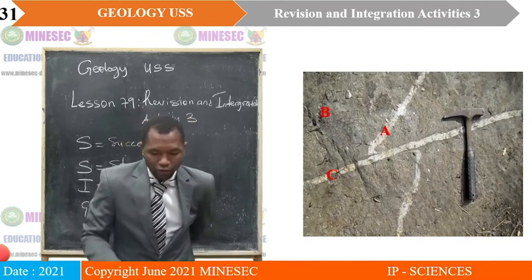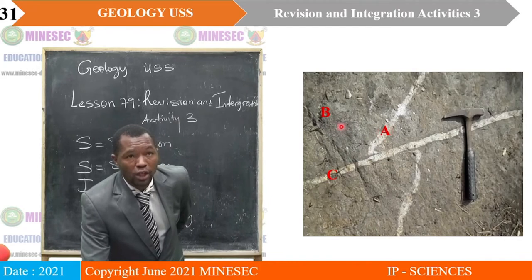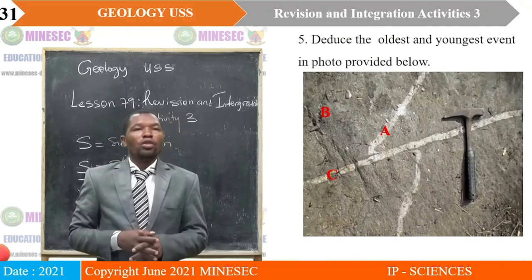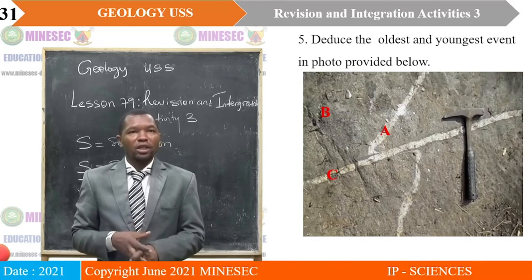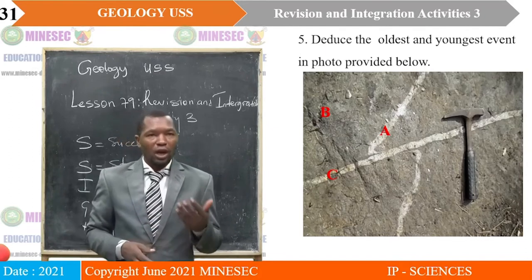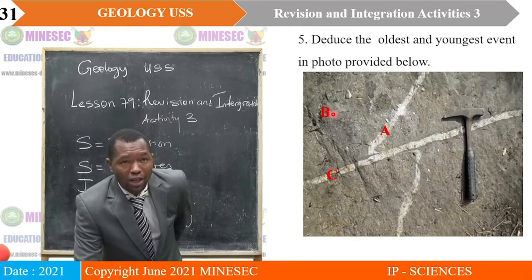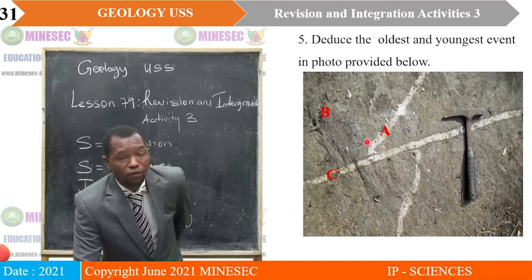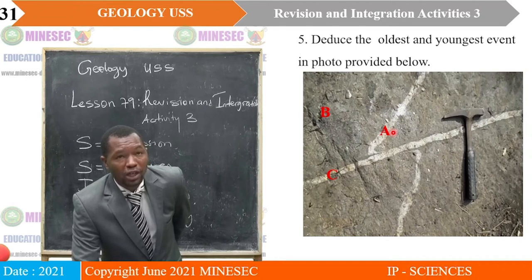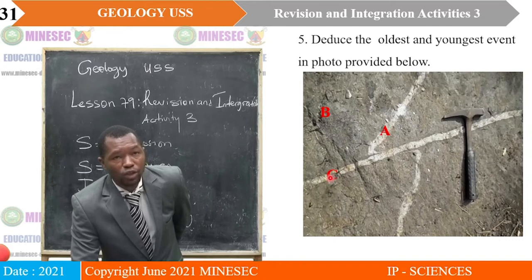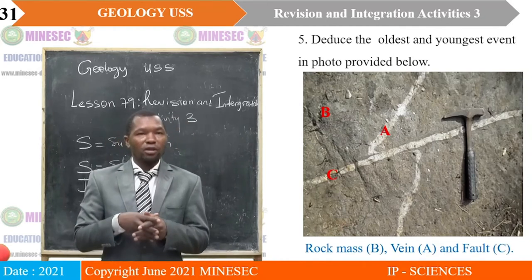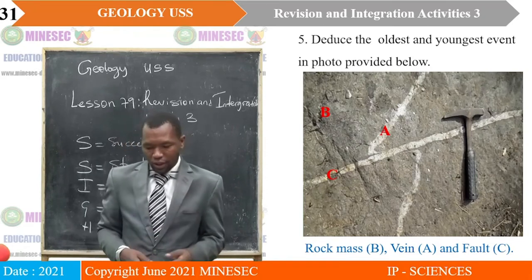Observe this photo containing feature A, feature B, and feature C. Deduce the oldest and the youngest event in the photo. B is a rock mass, A is a vein that has been displaced, and C is the vein doing the displacing. The first formation in that area would have been B — the rock mass — then followed by A — the vein that has been displaced — and then lastly C, which is the vein displacing or the fault. So the order of events is: rock mass, then vein A, then vein C.